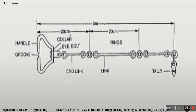One important point of this chain instrument is the link. The distance from the center of one ring to the center of the next ring is called one link. The distance of one link is generally equal to 20 cm. This is the least count of a metric chain.